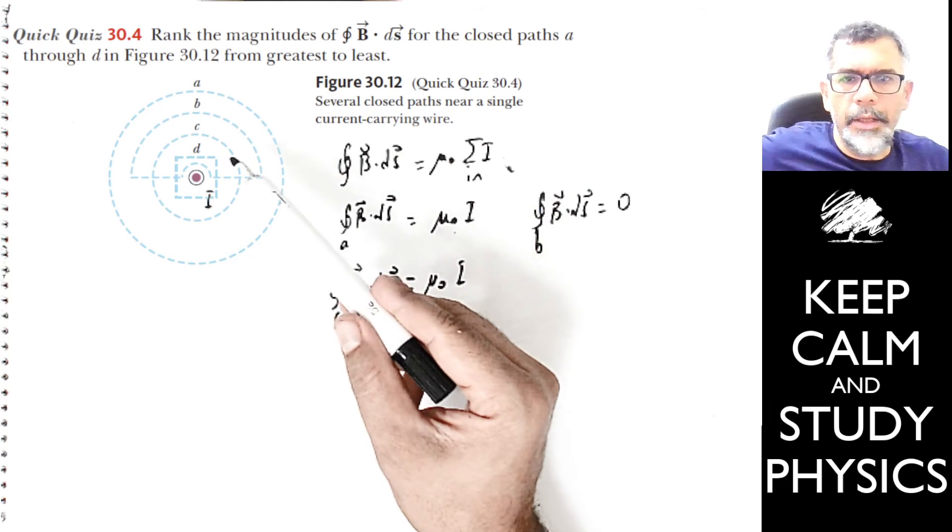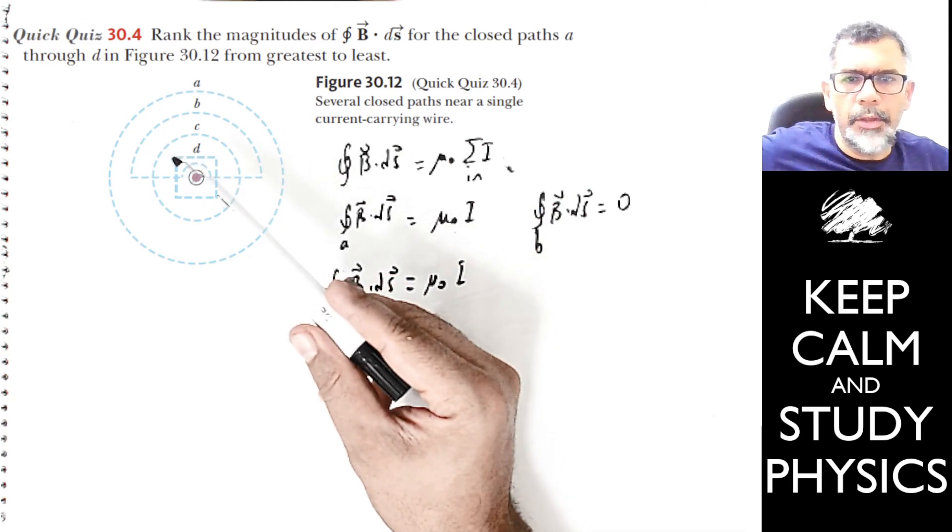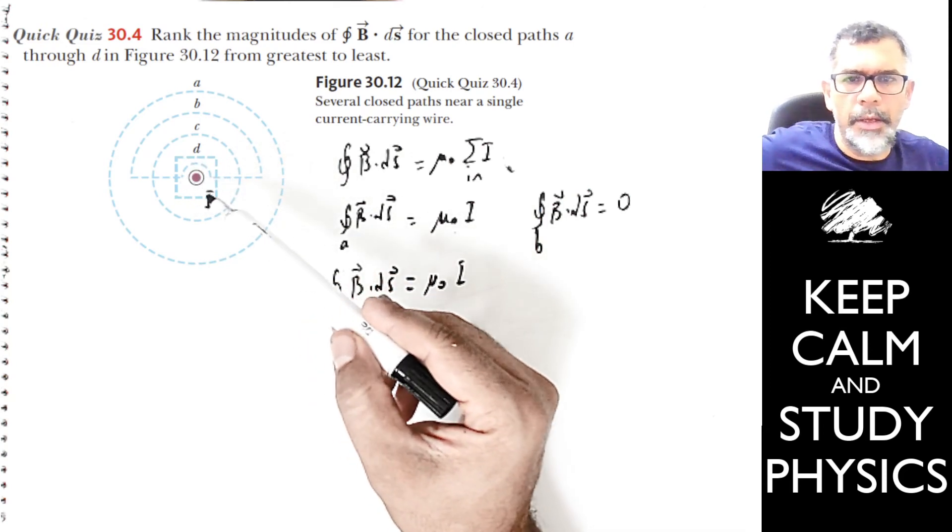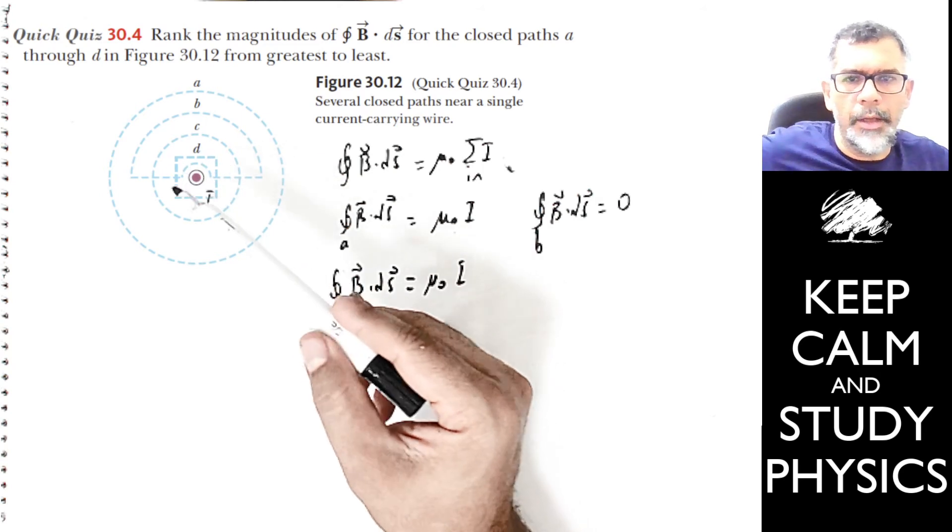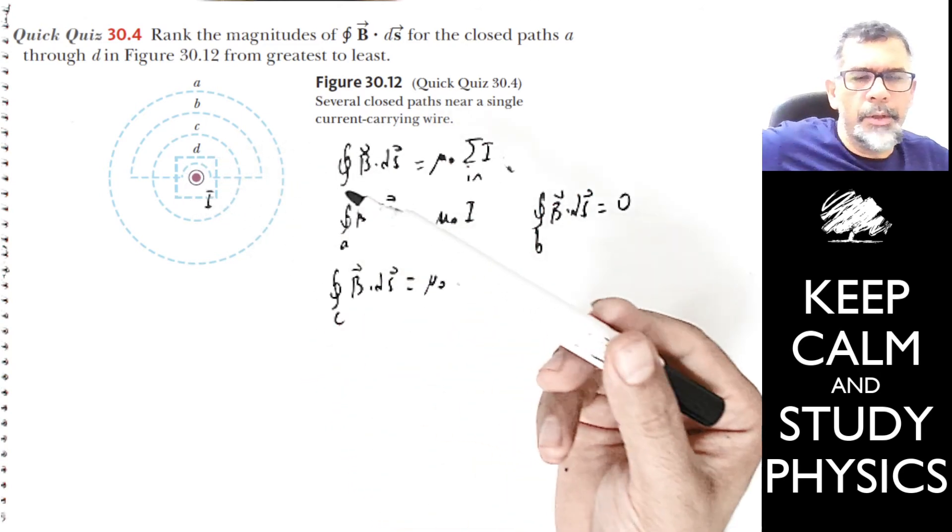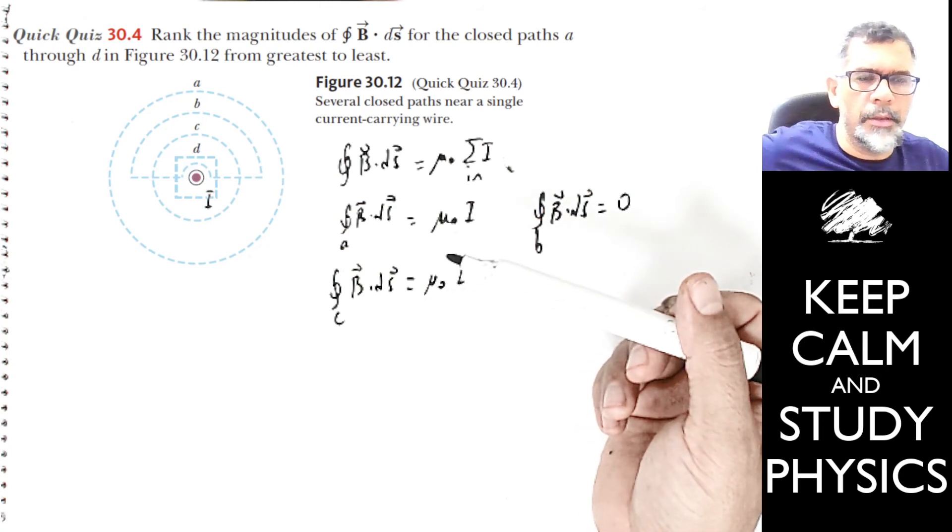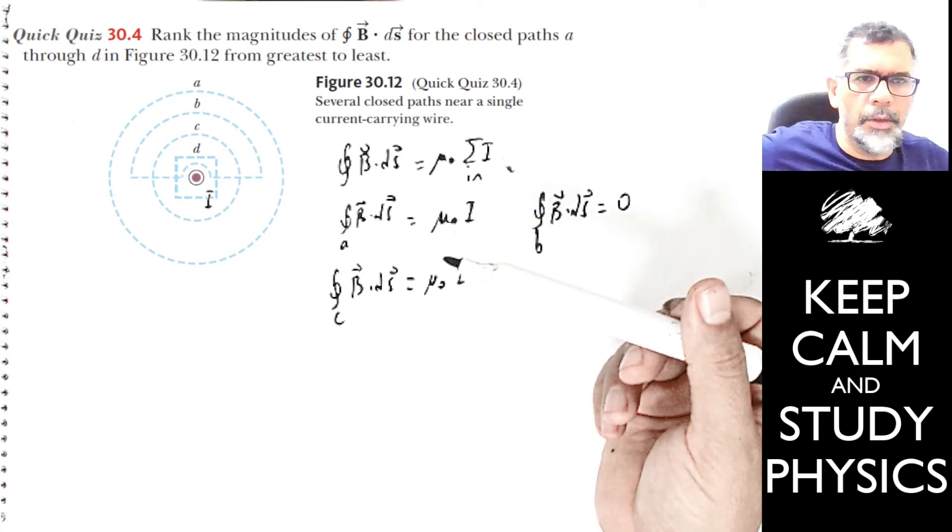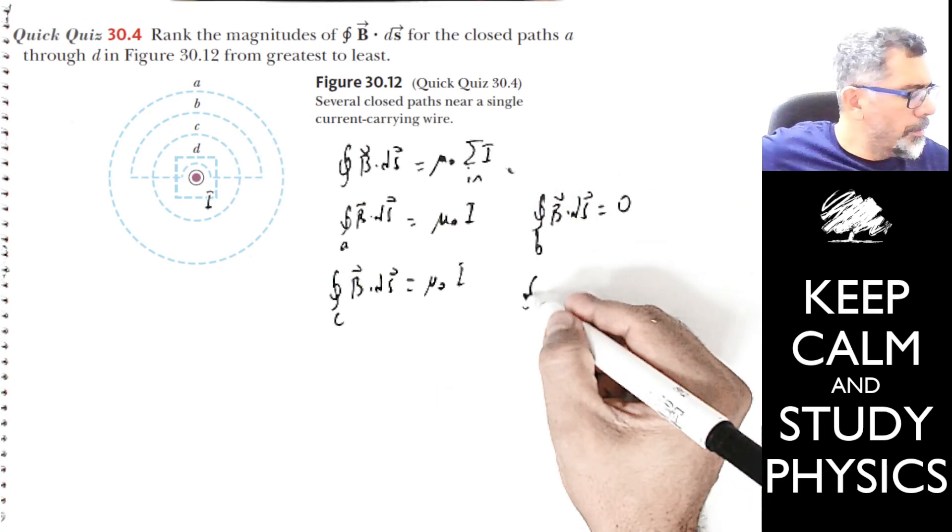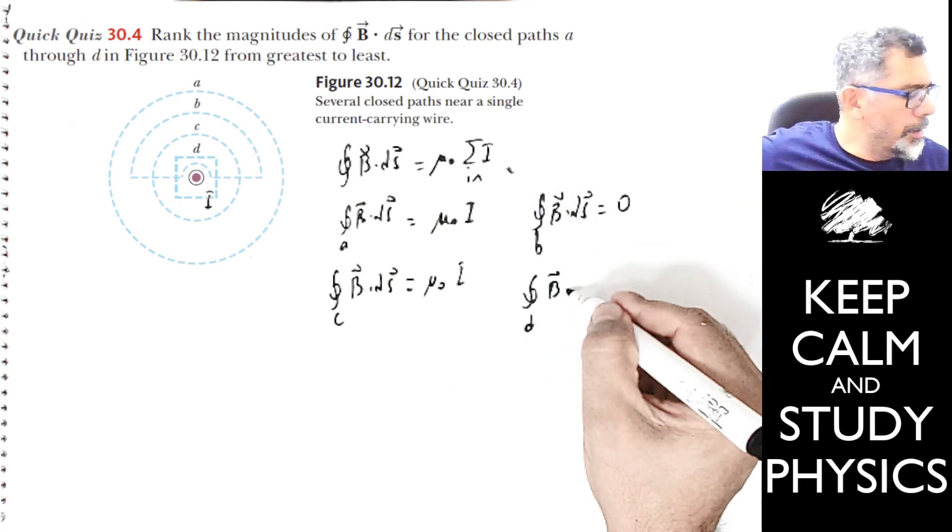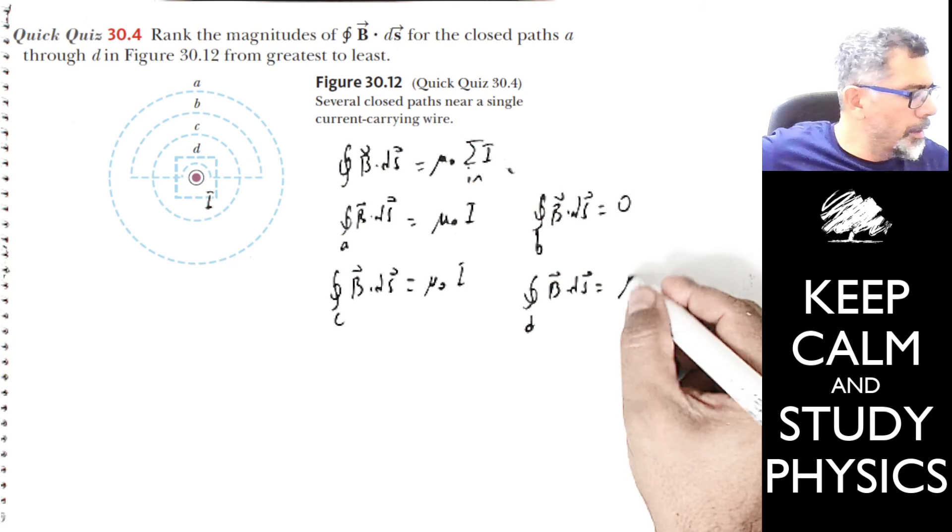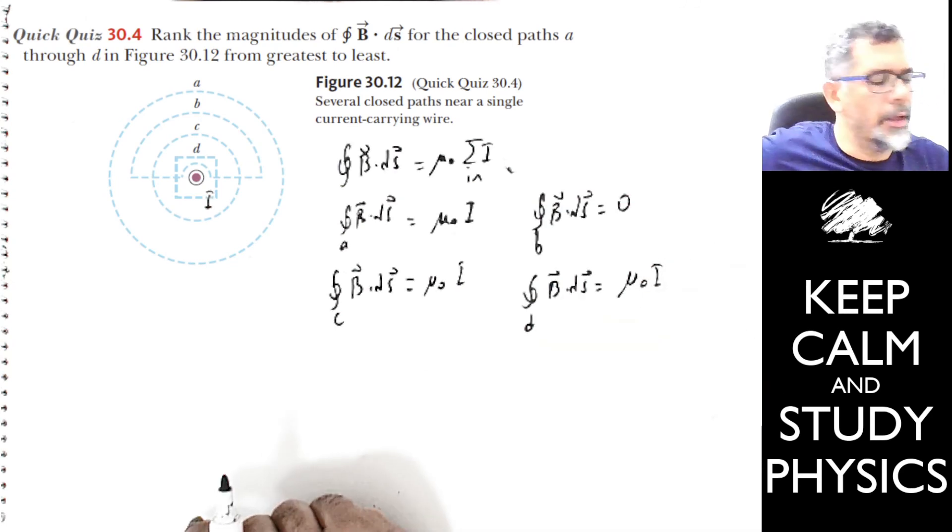When we come to D, D is not a circle but a square. But it's a closed path and contains the current. The result does not depend on the shape at all, as long as the path is closed and contains the current. So for D, B·dS is mu₀I.